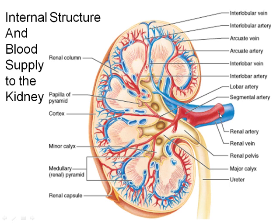The renal artery brings blood in and branches into sub-arteries that go up through the renal columns. The arcuate artery is the artery that divides the renal cortex from the renal medulla, and the blood vessels that come off it feed the nephrons. After the blood has been filtered, it is collected in the venous system, and ultimately all veins drain into the renal vein, which returns blood to the inferior vena cava.